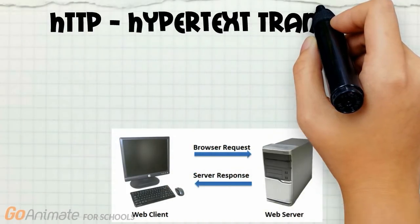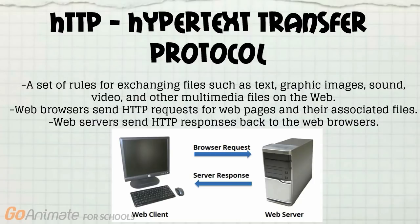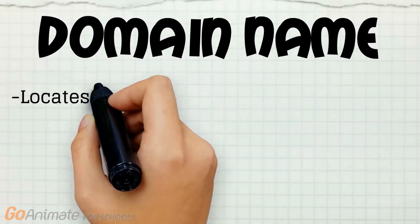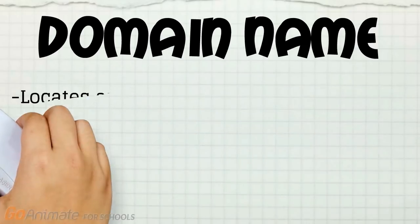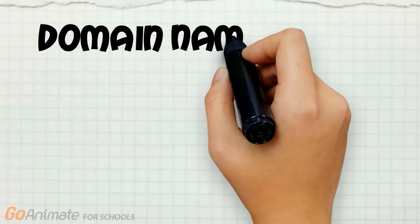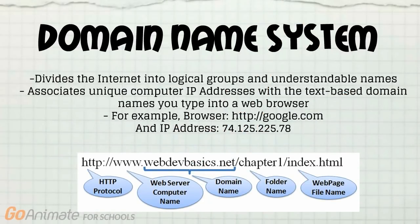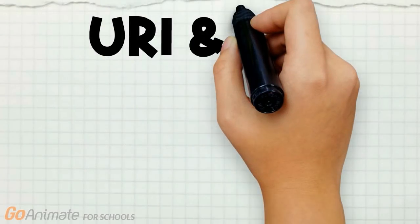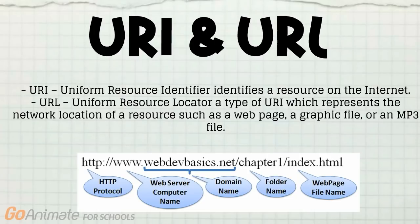HTTP is a set of rules for exchanging files such as text, graphic images, sound, video, and other multimedia files on the web. Web browsers send HTTP requests and the server replies. A domain name locates an organization or other entity on the internet — for example, www.ibm.com. The domain name system (DNS) divides the internet into logical groups with understandable names, and associates unique computer IP addresses with text-based domain names in browsers. A uniform resource identifier (URI) identifies a resource on the internet, while a uniform resource locator (URL) is a type of URI that represents the network location of a resource.